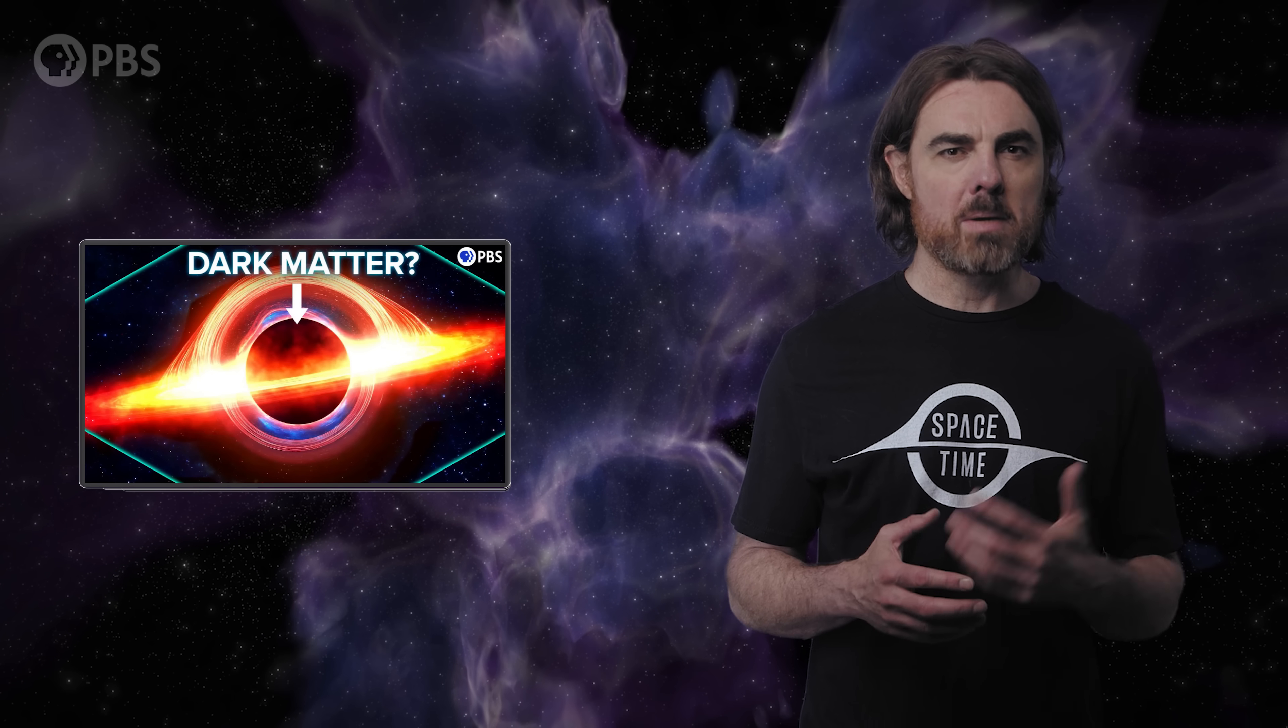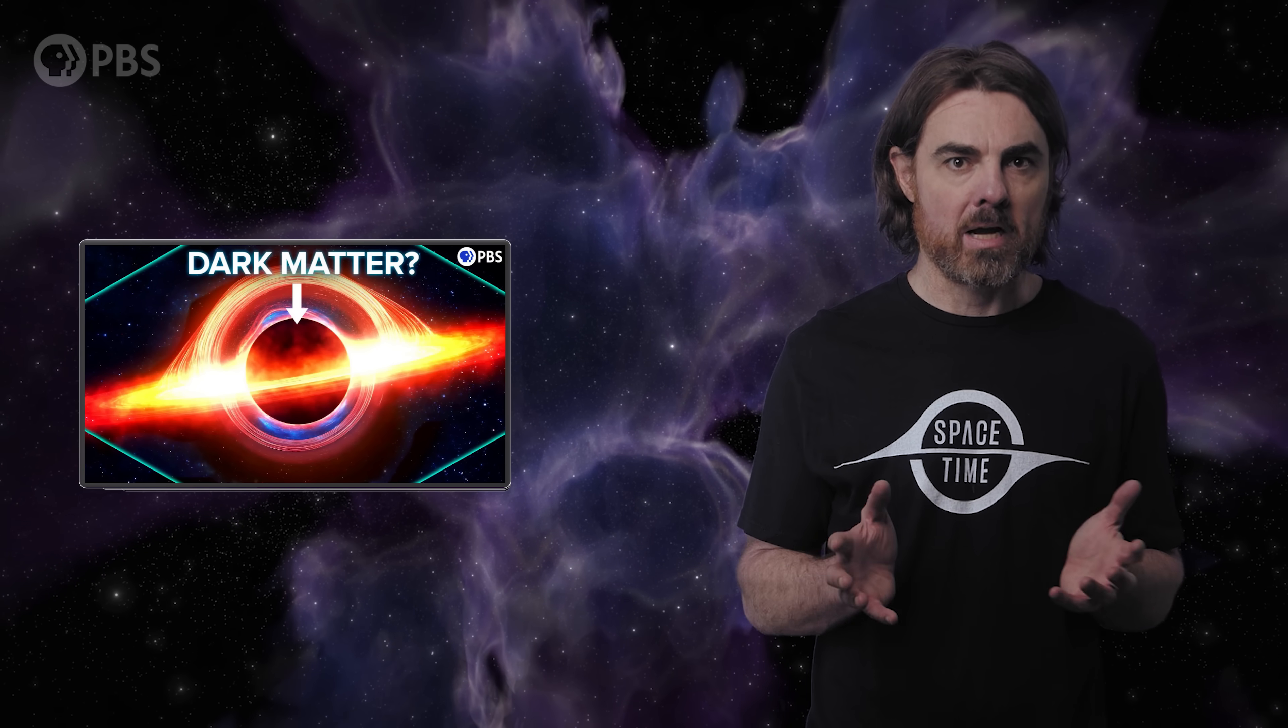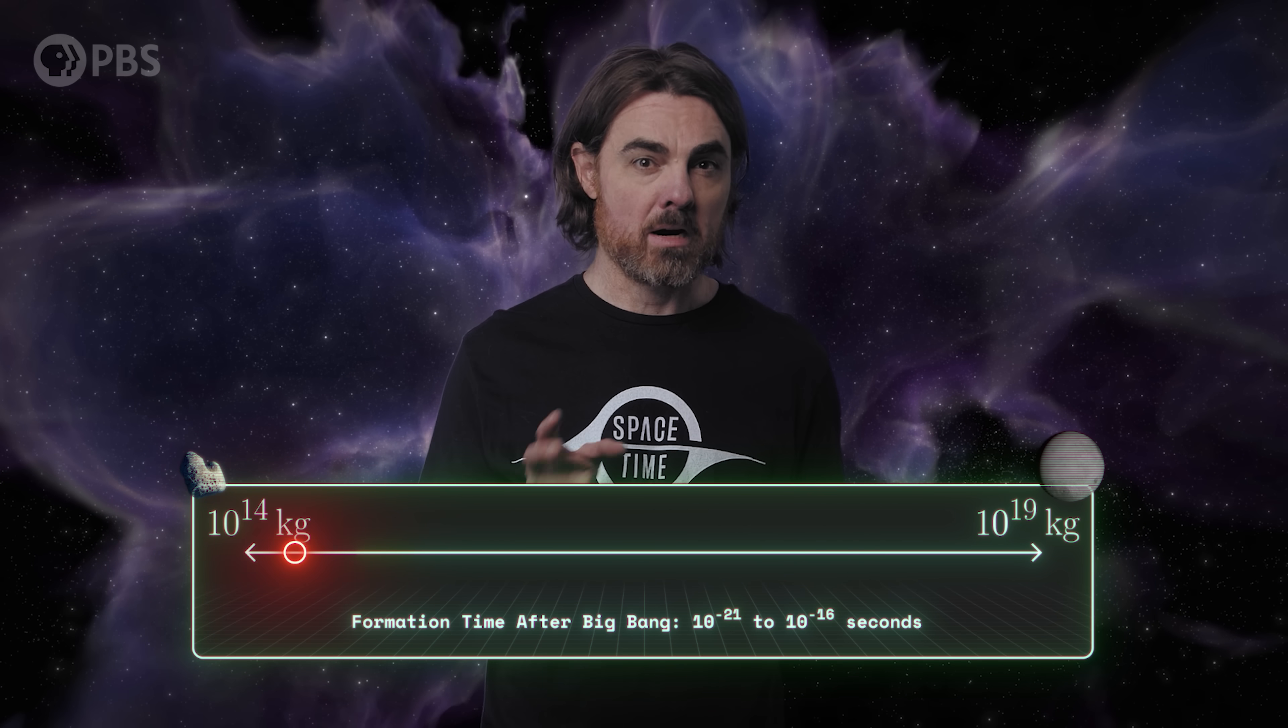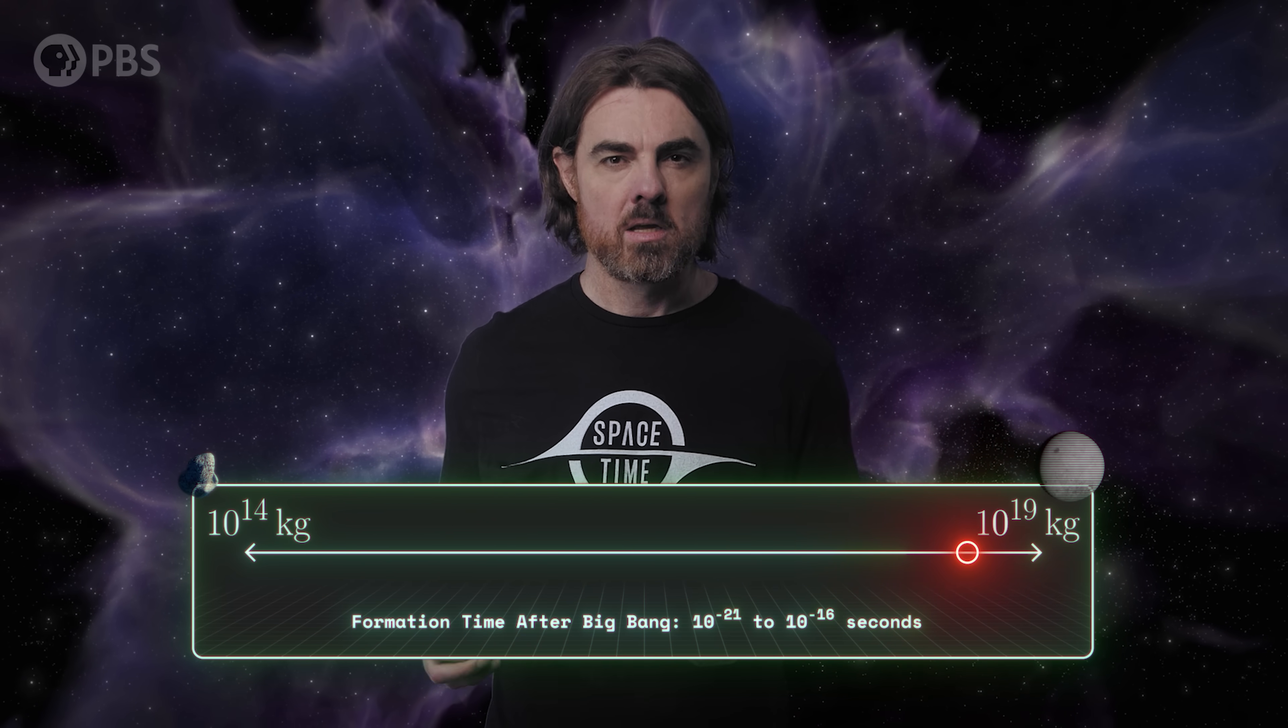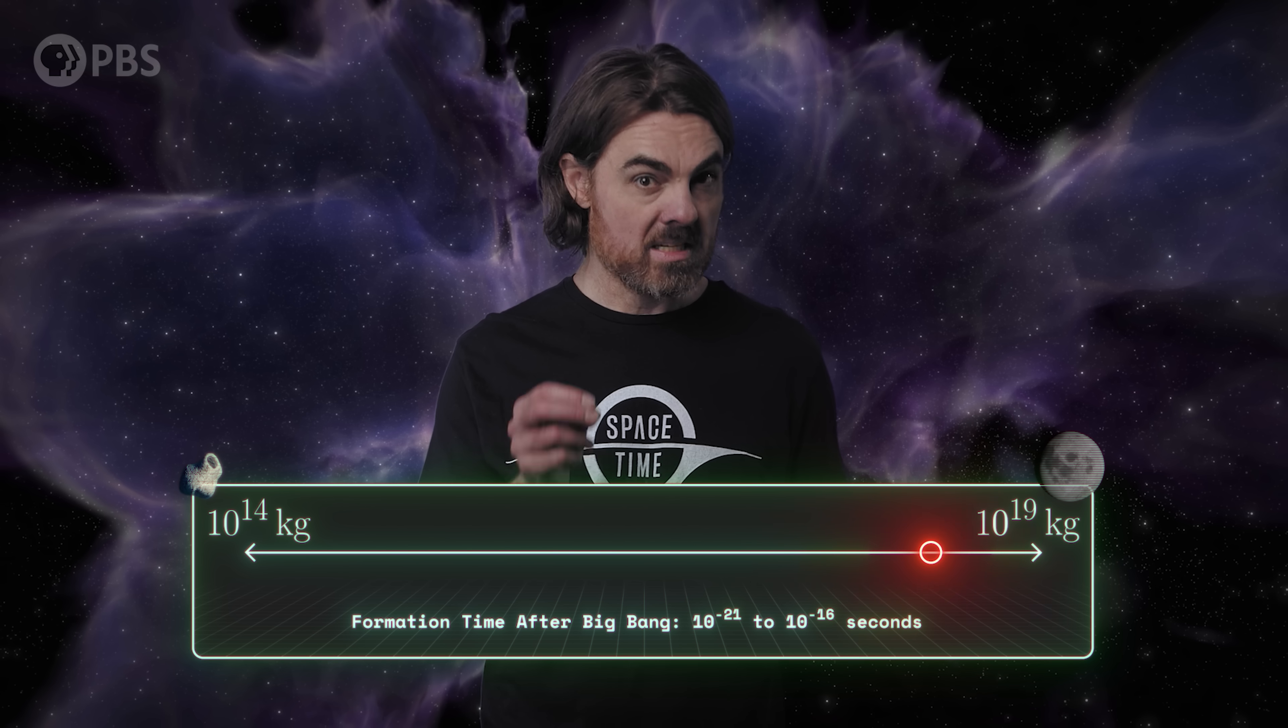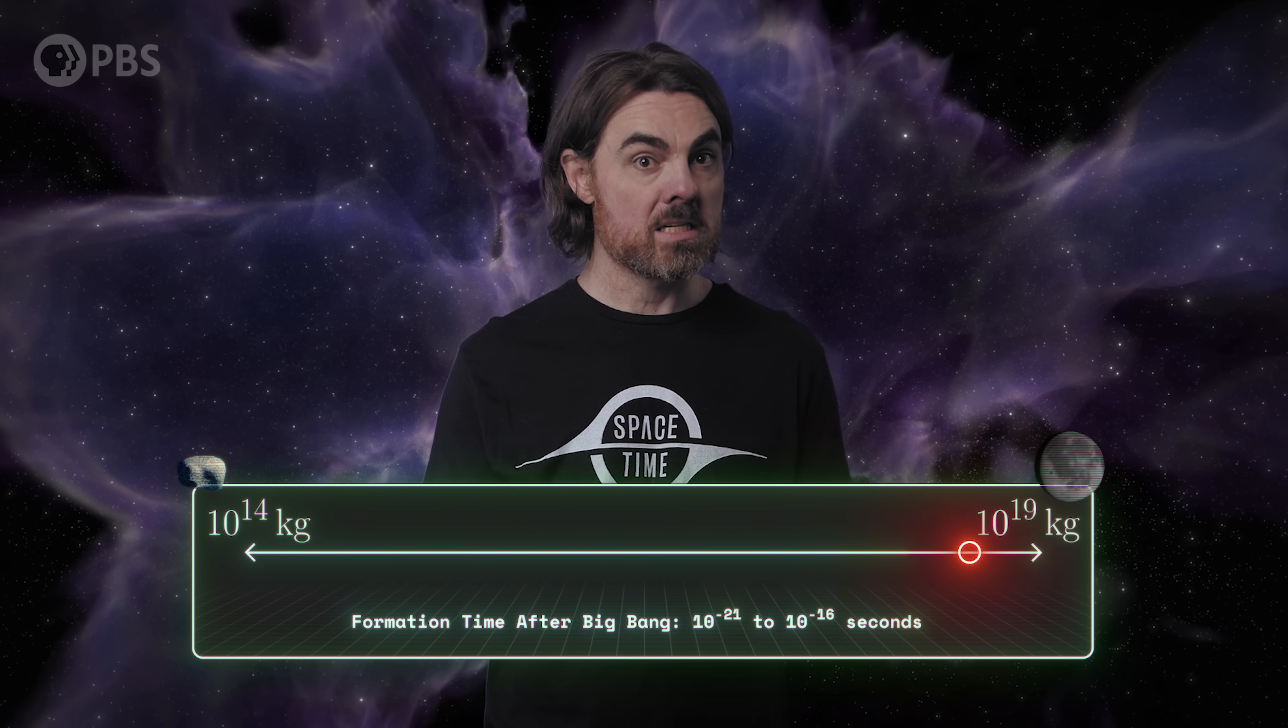These researchers used another assumption to choose that formation time. I mentioned that some people think PBHs could explain dark matter. But that only works for a narrow range of primordial black hole masses, because our observations have ruled out there being lots of black holes outside that range. That range is roughly between that of a medium sized asteroid and a small moon, or 10 to the power of 14 to 10 to the power of 19 kilograms. If PBHs are dark matter, then they have to be in this mass range, and they must have formed between 10 to the power of minus 21 and 10 to the power of minus 16 seconds after the Big Bang. And this is the formation range that the researchers consider. The universe at that age is well within the quark-gluon plasma period, so PBHs formed then could potentially have color charge if they were small enough to land in one of these random fluctuations of color.